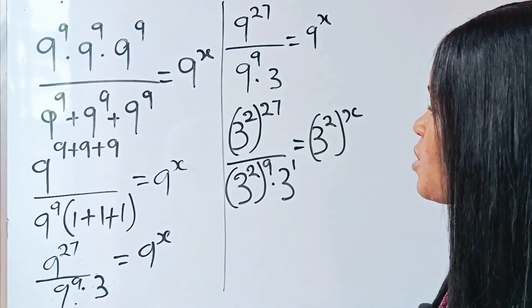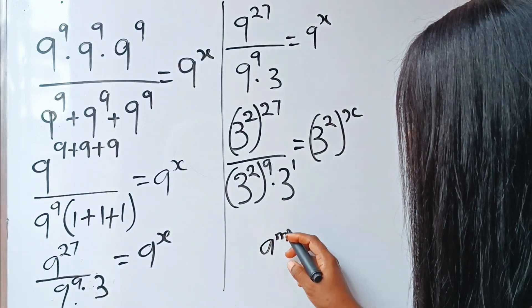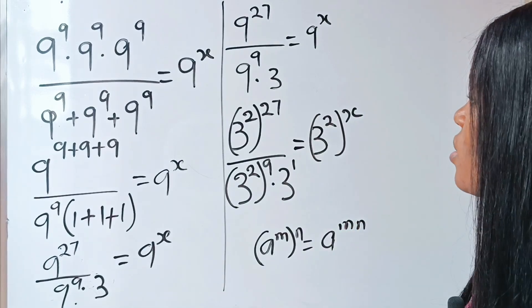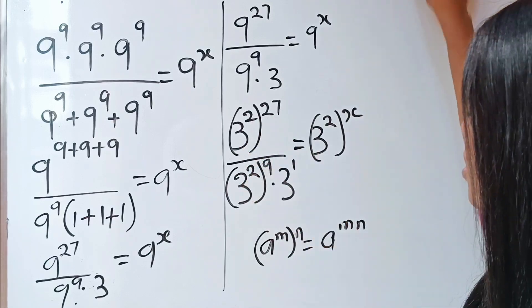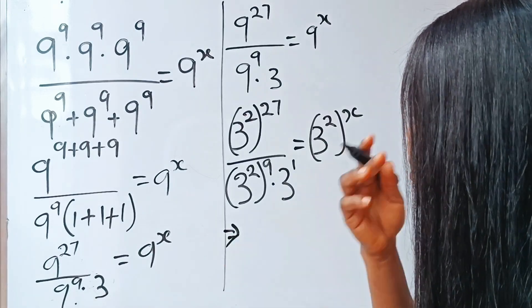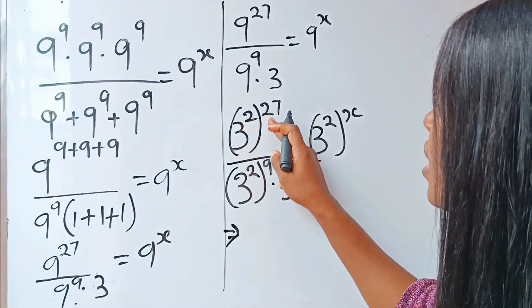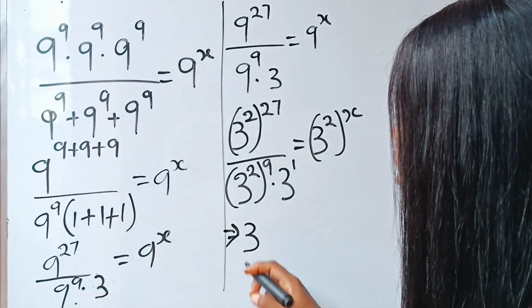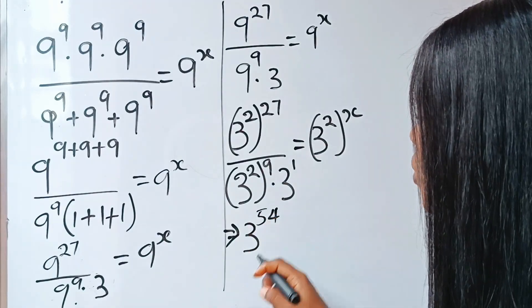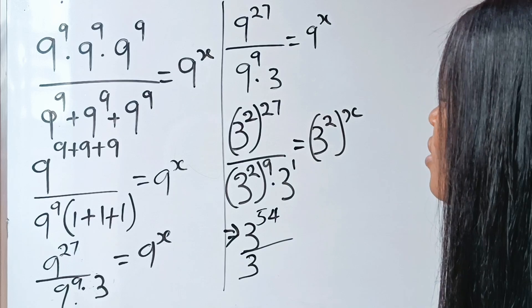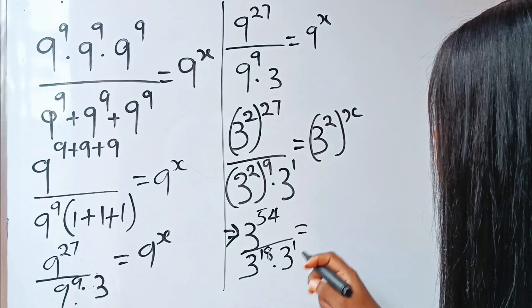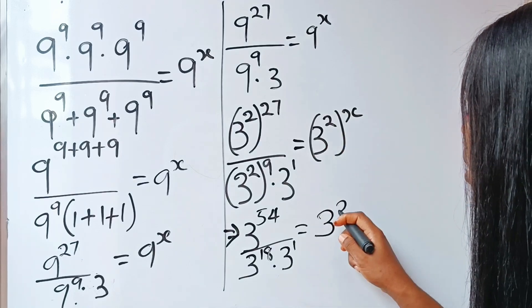Now let's recall this law of exponents that states that a to the power of m raised to the power of n is equal to a to the power of m times n. So once we have more than one power on a base, we multiply the powers together to get one power. This implies we have 3 to the power of 2 times 27. So 2 times 27 is 54. Divided by 3 to the power of 2 times 9, which is 18, multiplied by 3 to the power of 1. The right-hand side will be 3 to the power of 2x.